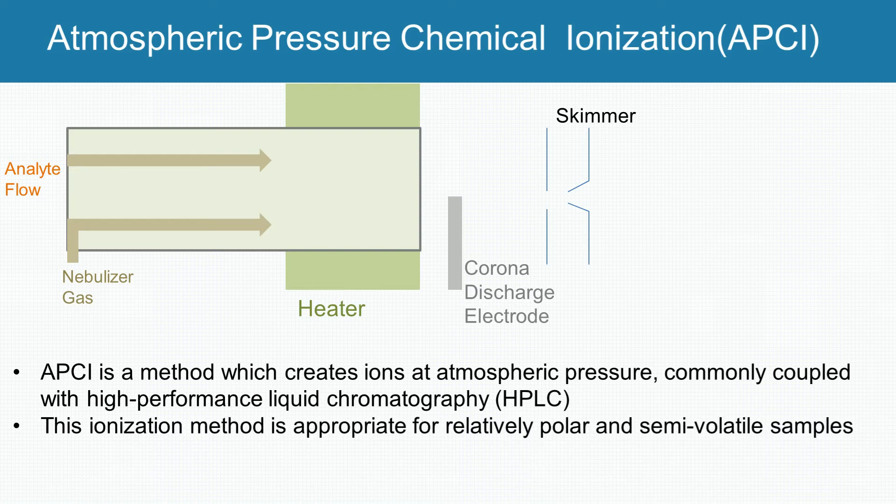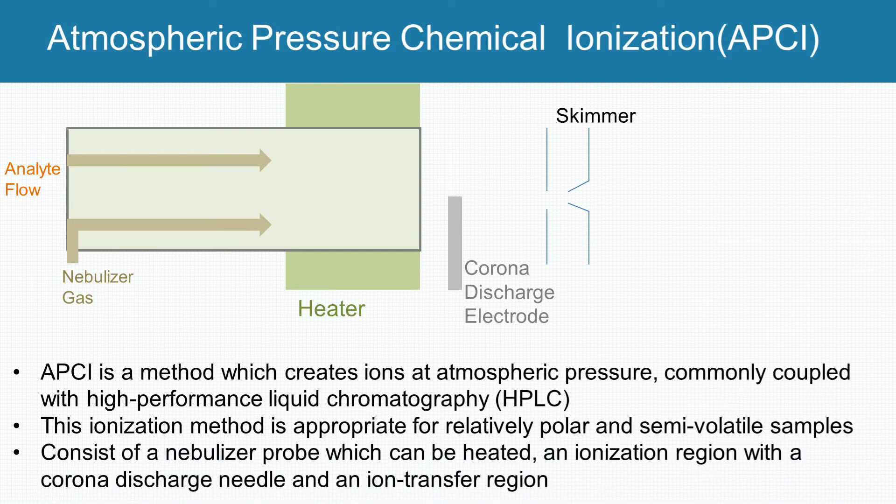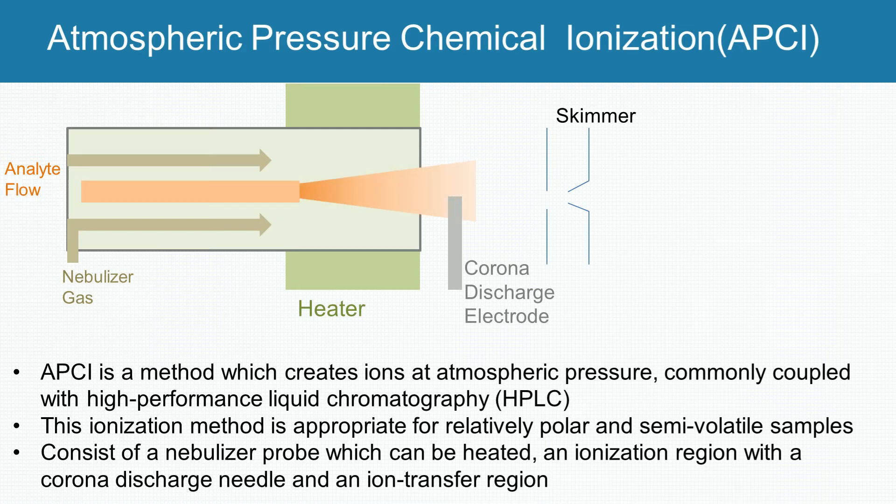An atmospheric pressure chemical ionization system consists of a nebulizer probe, which can be heated, an ionization region with a corona discharge needle, and an ion transfer region. A sample solution flows through a heated nebulizer where it is produced into a mist and the mist is transformed into a gas stream. When the gas stream arrives in the ionization region at atmospheric pressure, the gaseous solvent and sample are then ionized by a corona discharge.